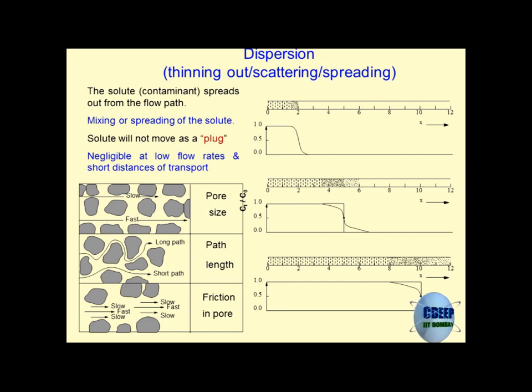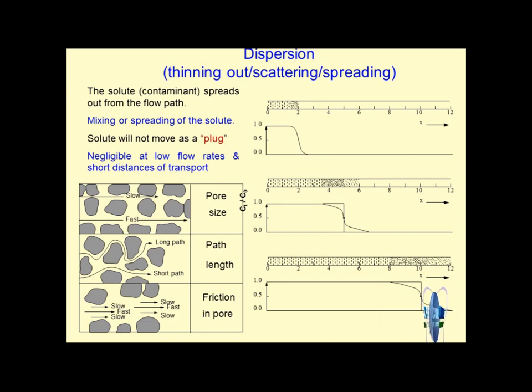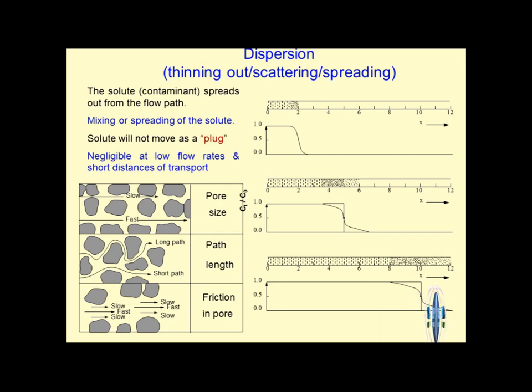Dispersion is something similar to diffusion, but in this case the contaminant completely thins out, scatters, or spreads into the entire system. When you put potassium permanganate into stationary water, that is diffusive contaminant transport. The moment you stir it, the speed of diffusion increases. A cup of tea: you pour some sugar and wait - it will take a very long time. So you immediately stir it - that is mechanical agitation.